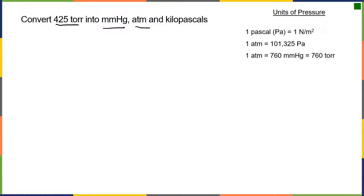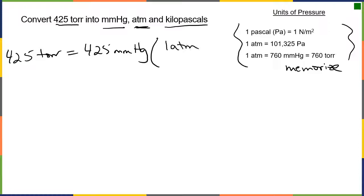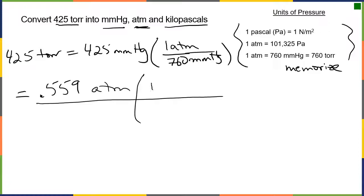Let's do some conversions. Convert Torr into millimeters of mercury, atm, and pascals. Please memorize these conversions. 425 Torr is exactly 425 millimeters of mercury. To convert to atm, there's 1 atm for every 760 mmHg, giving us 0.559 atm. To continue converting, there are 101.3 kilopascals per atm, giving us 55.6 kPa. In general, in chemistry we use atmospheres, Torr, and millimeters of mercury.